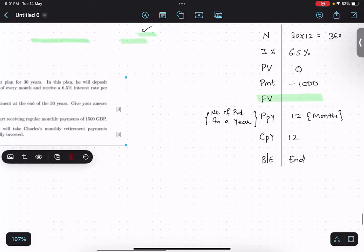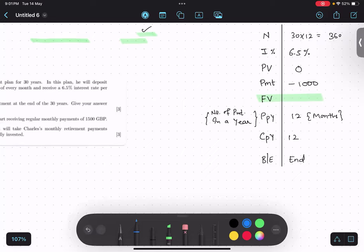Please listen to this thing very carefully. N is number of payments in total, and PPY is number of payments in a year. In a year how many payments are we making? We are making 12 payments, so that's why I'm going to multiply by 12, so 360 payments.